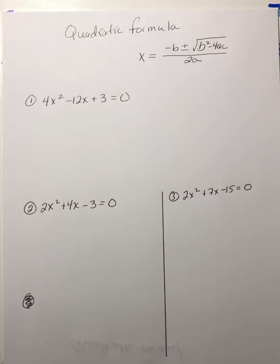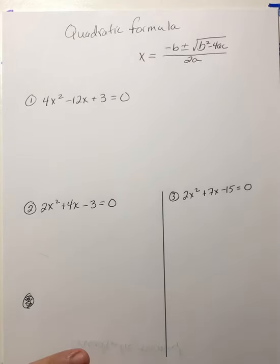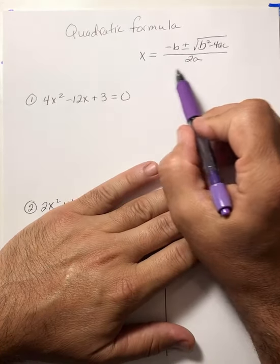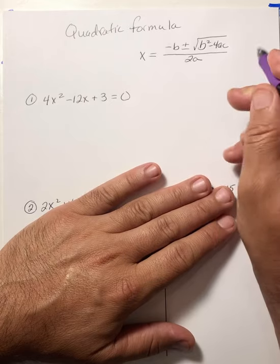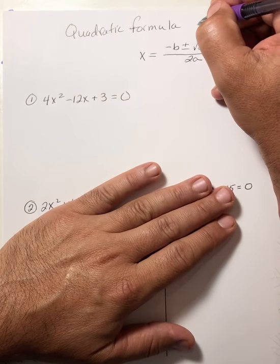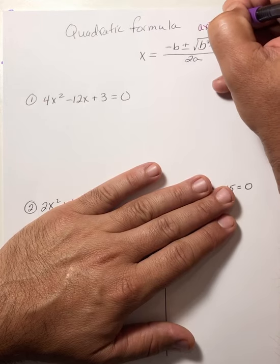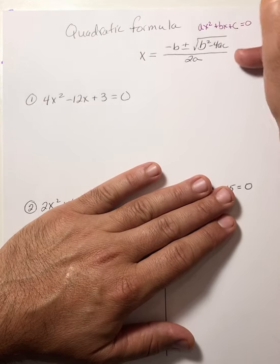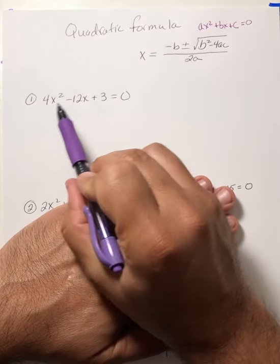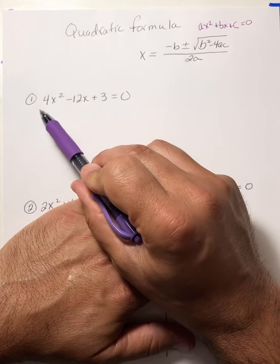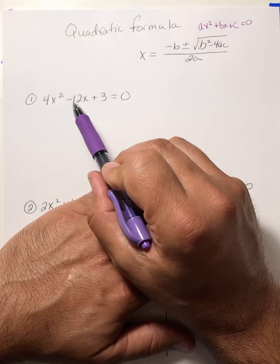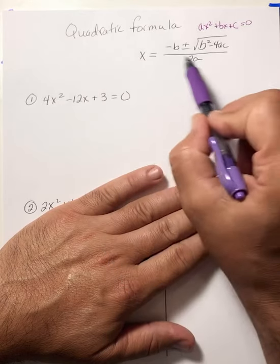All right stat class, today we are looking at the quadratic formula. We all remember this from algebra. The quadratic formula is negative b plus and minus the square root of b squared minus 4ac all over 2a, coming from the general form of a quadratic: ax squared plus bx plus c equals 0. The quadratic formula can be used for any quadratic that is not factorable, or really for solving any quadratic.